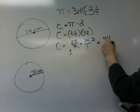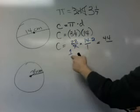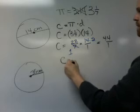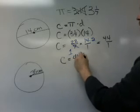And instead of doing 7 times 1, we're doing 1 times 1, which is 1. So in this problem, the circumference is 44 centimeters.